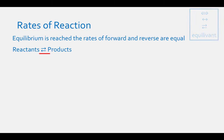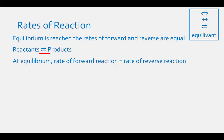There are a couple different ways you might see an equilibrium arrow drawn, but they all mean the same thing. At equilibrium, the double-sided arrows mean that the rate of the forward reaction, where reactants become products, equals the rate of the reverse reaction, where products become reactants.